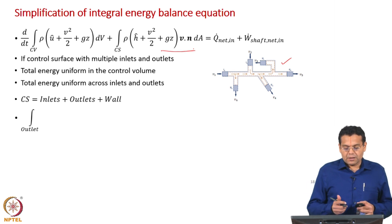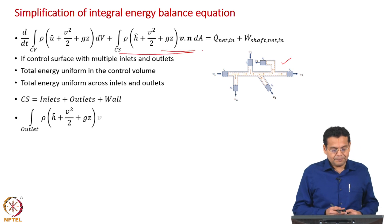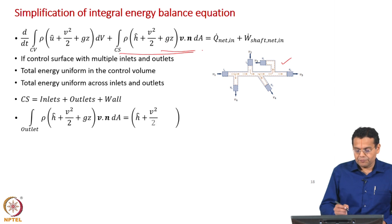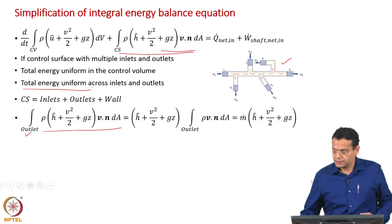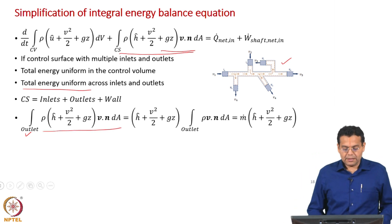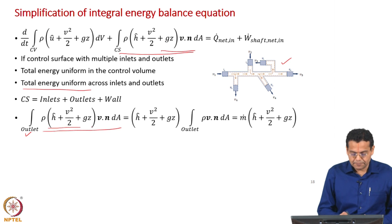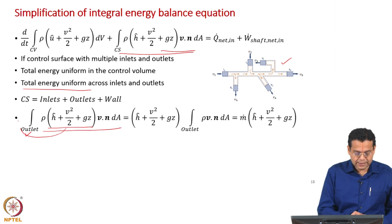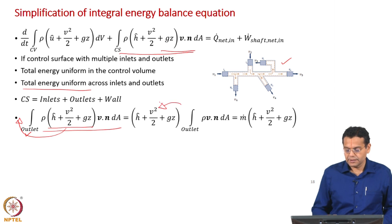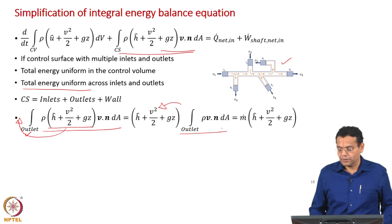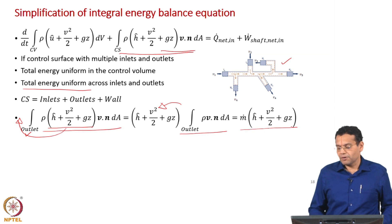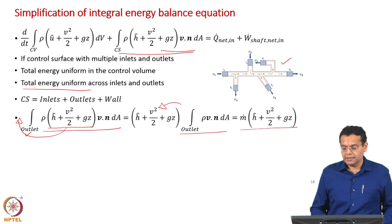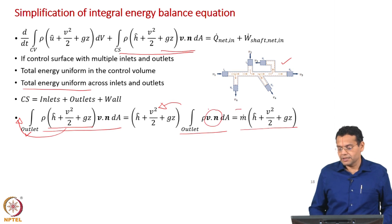To simplify the term at inlets and outlets: since the total energy is uniform across the inlet or outlet cross section, that term can be taken outside the integral sign, and what remains is the mass flow rate. So we write this as ṁ (mass flow rate) times the sum of all energy terms, with a negative sign for inlets because v·n is negative there.